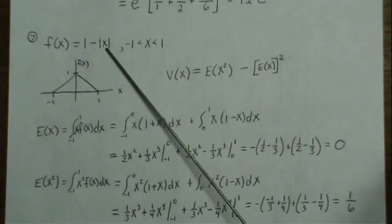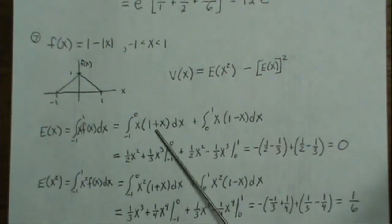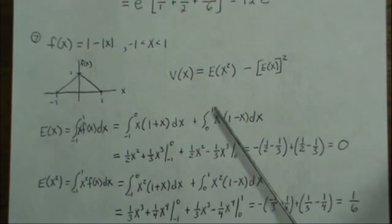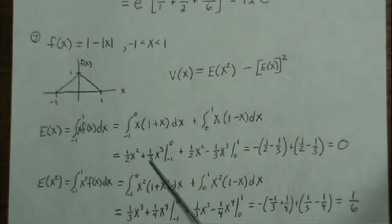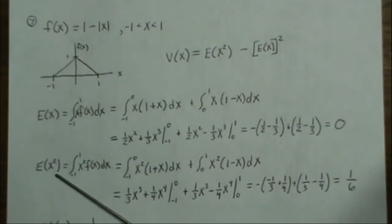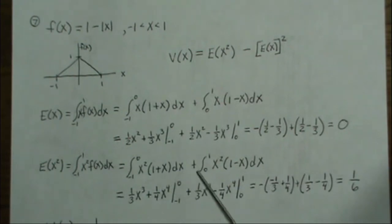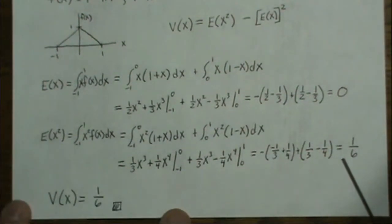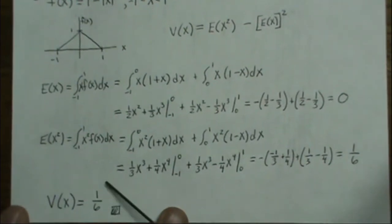The expected value of X is the integral of x times f(x) dx over all values. Because of the absolute value, we integrate over negative and positive regions separately. For the negative region the density is one plus x (since |x| = -x there), times x; for the positive region it's x times (one minus x). Integrating gives E[X] = 0, as expected. For E[X²], we integrate x squared times the density over both regions, giving one sixth. So the variance is one sixth.